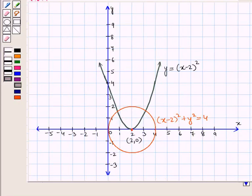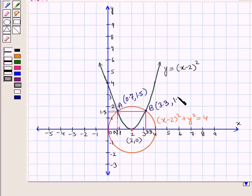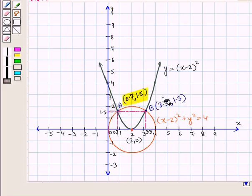In this graph you can see that the two curves intersect each other at two points, point A and point B. For point A, the x-coordinate is approximately 0.7 and the y-coordinate is approximately 1.5, so point A has coordinates (0.7, 1.5). Similarly, point B has coordinates (3.3, 1.5). These two points are the solutions of the given system of equations.